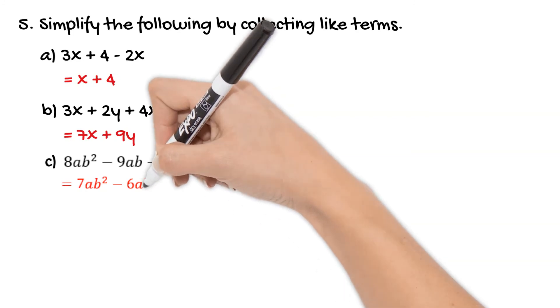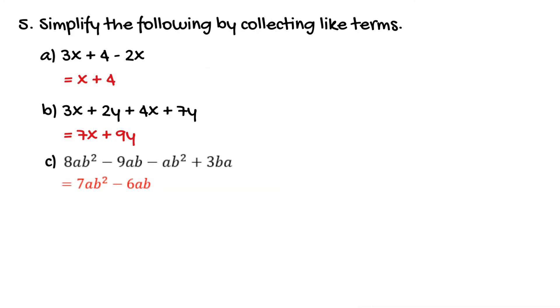So if we've got 8ab squared minus 9ab minus ab squared plus 3ba we're dealing with that in two chunks. So we've got 8ab squared minus ab squared which is going to give us 7ab squared and then you've got negative 9ab plus 3ba. So they're like terms we add 3 to negative 9 which gives us negative 6ab.